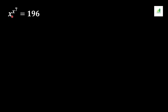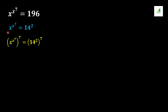In order to solve this question, first in this step we should convert 196 into 14 squared, because 14 squared is equal to 196. Now in the next step we should apply the 1/7 power from both sides of the equation.